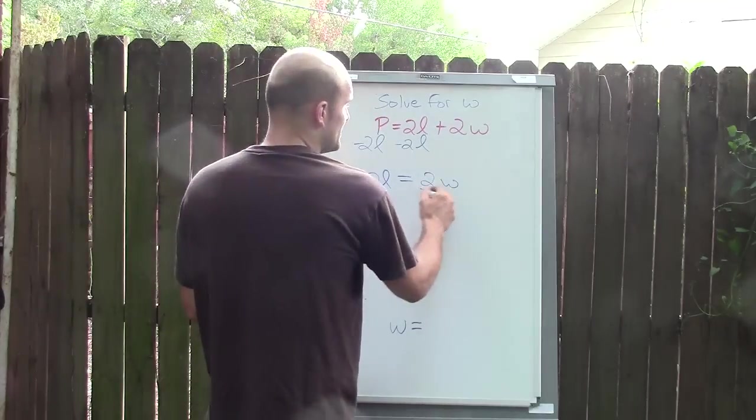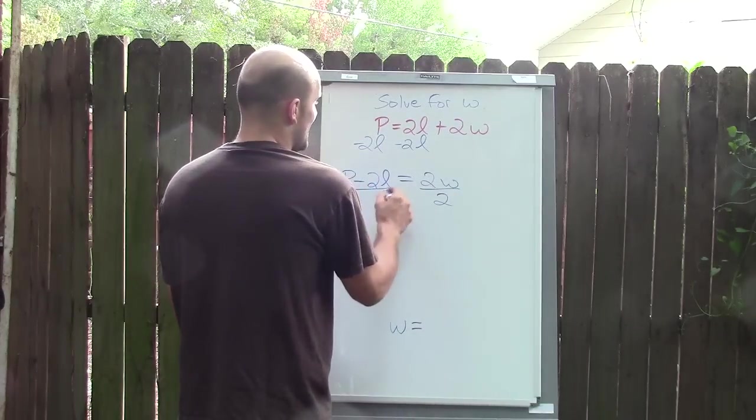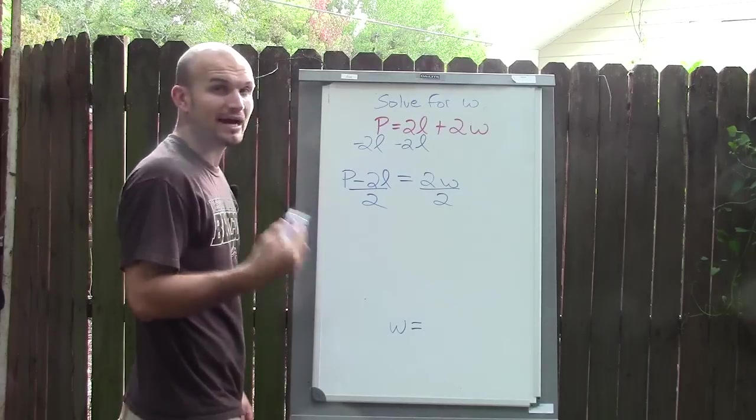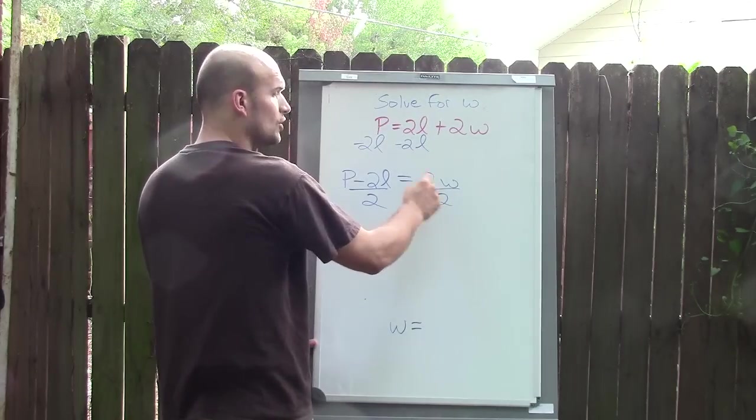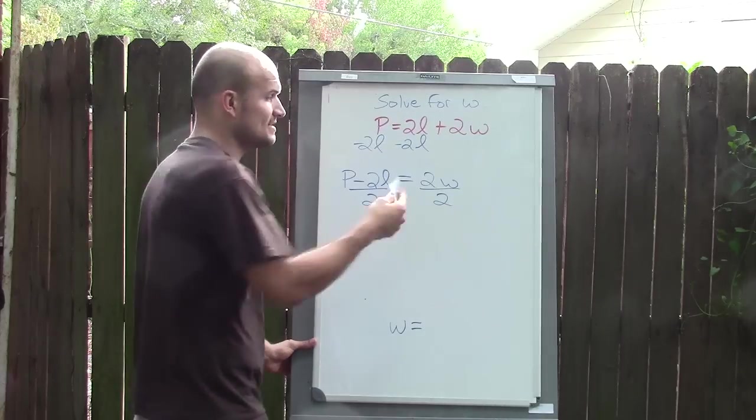To undo being multiplied by 2, I'm going to divide by 2. When I divide by 2, that 2 divided by 2 is 1, and 1 times W is W.